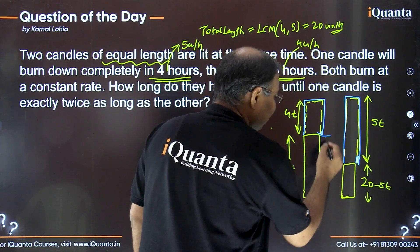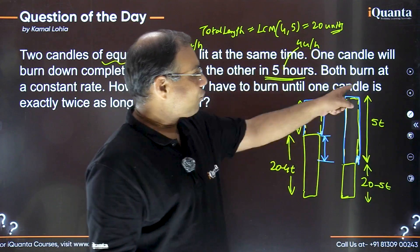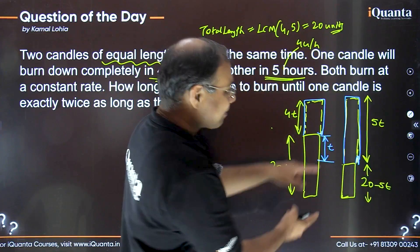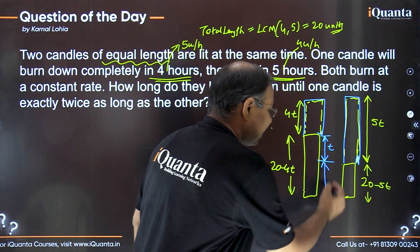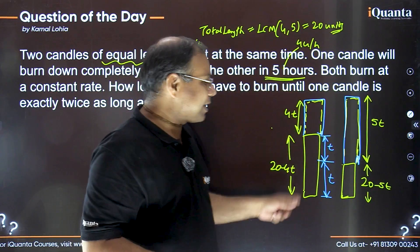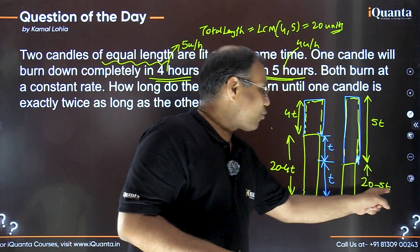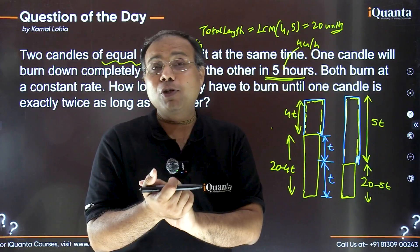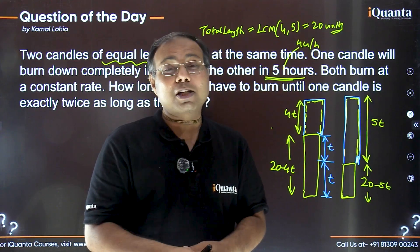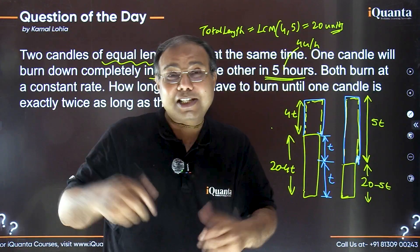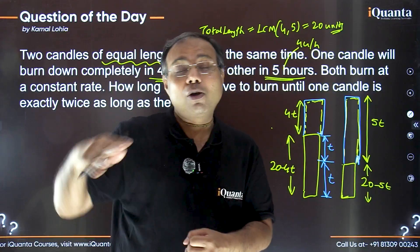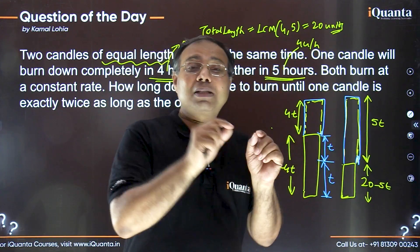The difference in remaining lengths is (20 − 4t) − (20 − 5t) = 5t − 4t = t. So the gap between the two remaining candles is t. Since the longer candle must be twice the shorter one, the shorter remaining length must also equal t. Converting word problems into equations is the most challenging task for most CAT aspirants — this simple logical insight makes it straightforward.